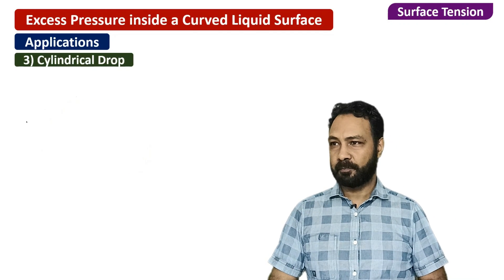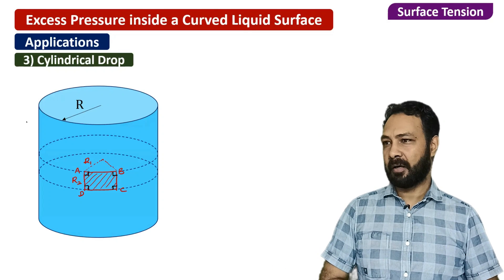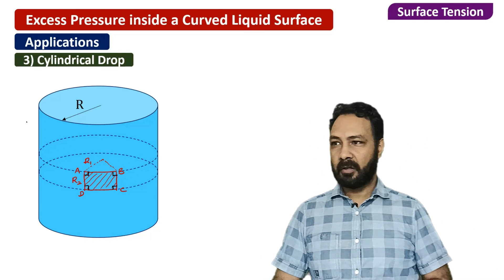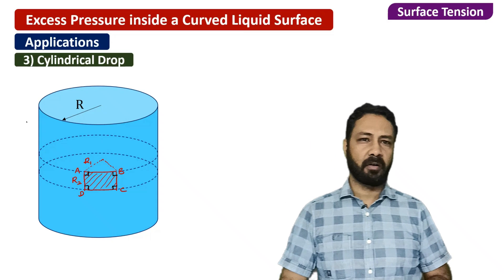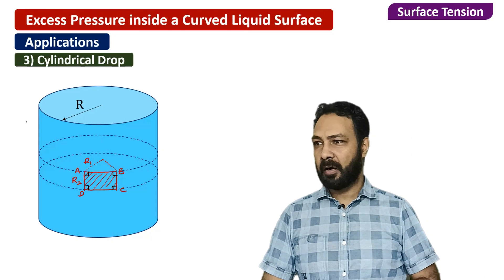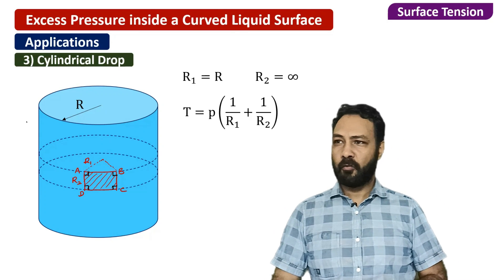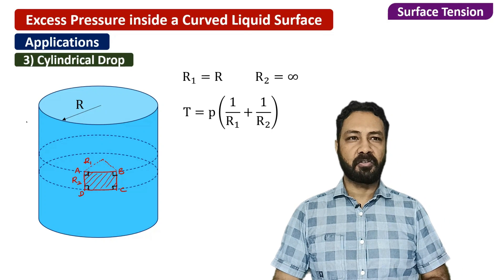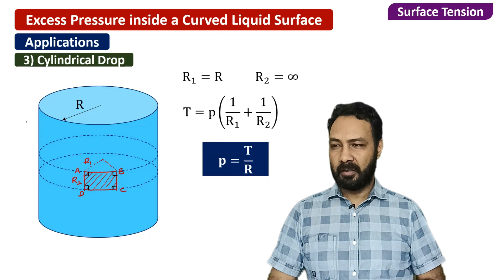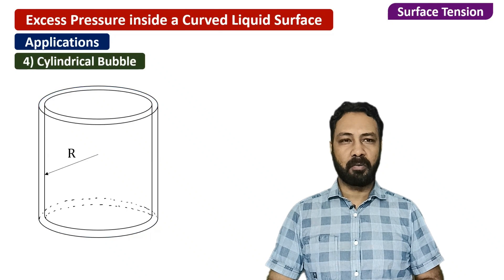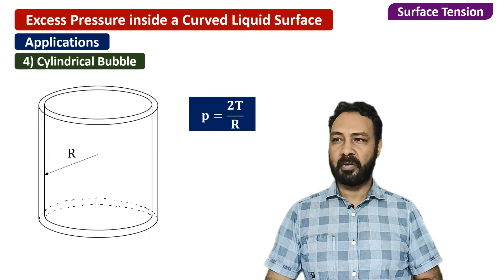Now for a cylindrical drop. Taking a rectangular element ABCD on the surface, part AB has radius of curvature equal to the cylinder radius R. Part BC or DA is a straight part, so its radius of curvature is infinite. Putting into the formula P = T(1/R1 + 1/R2) gives P = T/R for a cylindrical drop. For a cylindrical bubble with two surfaces, the expression doubles to P = 2T/R.